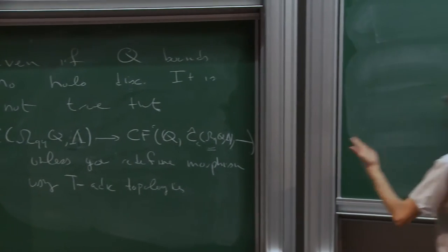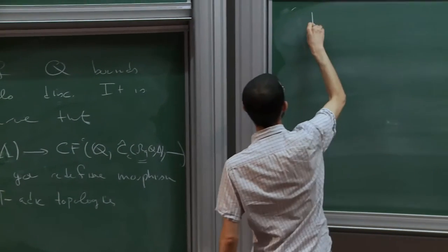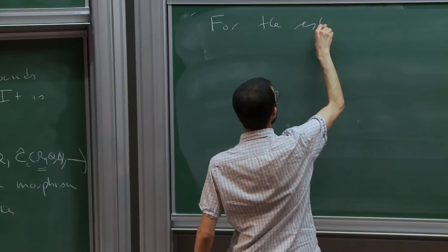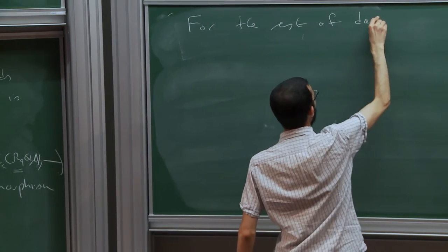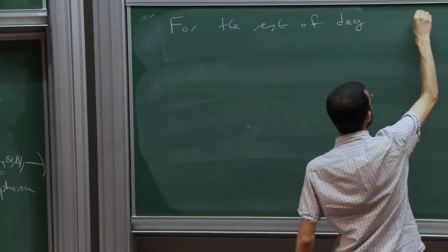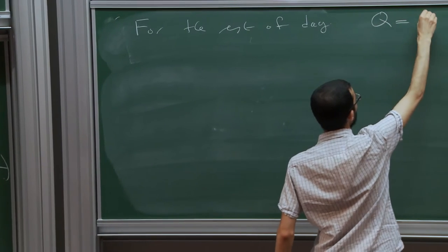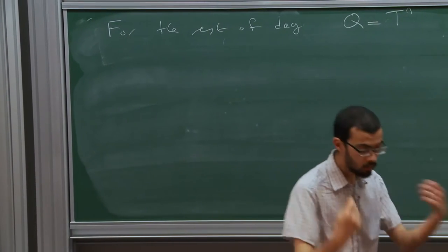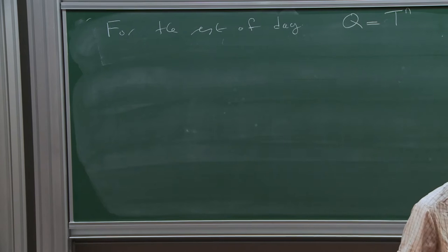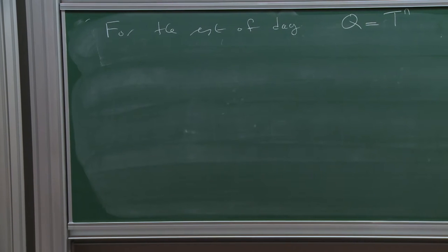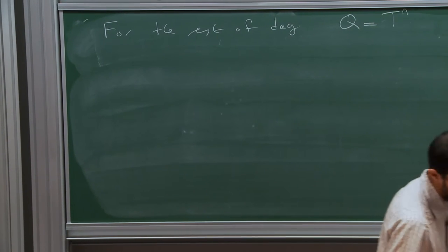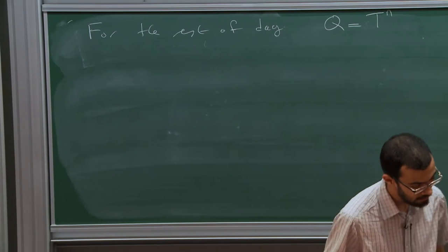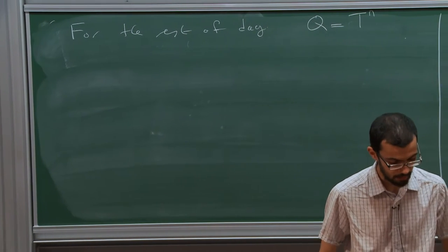For the rest of this talk, we're going to set Q to be a torus. I'm going to unwind some of what we've been doing in that case, and hopefully understand things better in this special case.